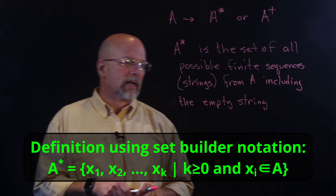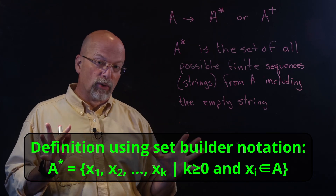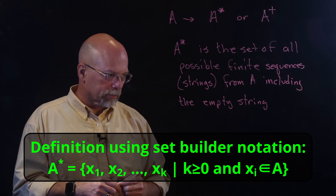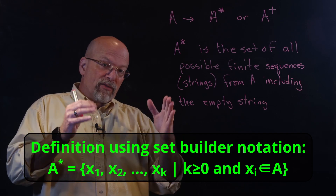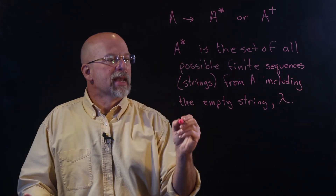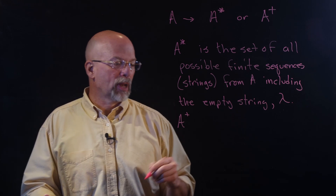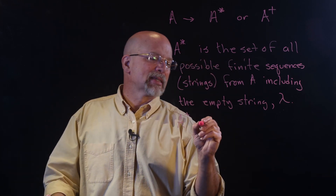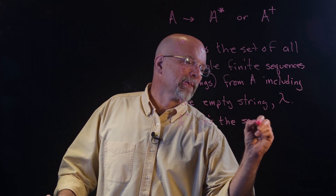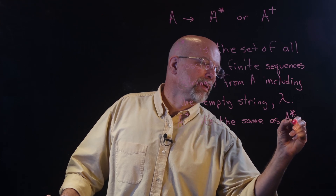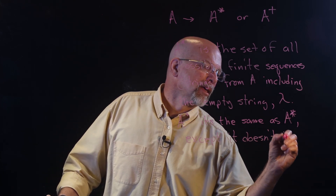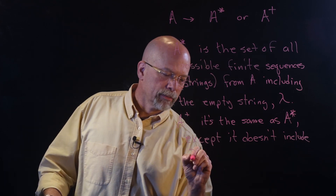The empty string is a string of length zero. It's really a formality to include it in this set, and we represent it with the lowercase lambda. A with the dagger — the plus — is exactly the same as A-star, except it does not include the empty string.